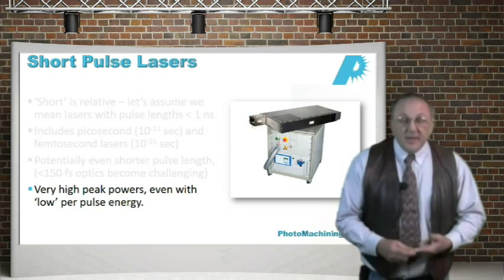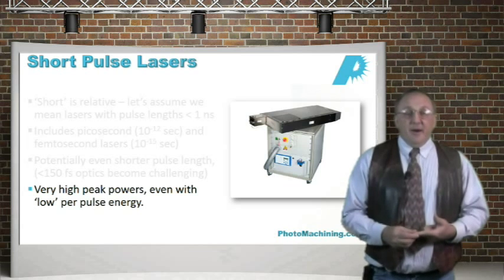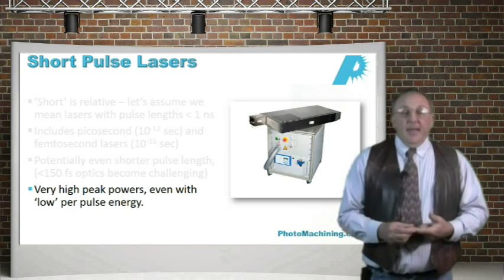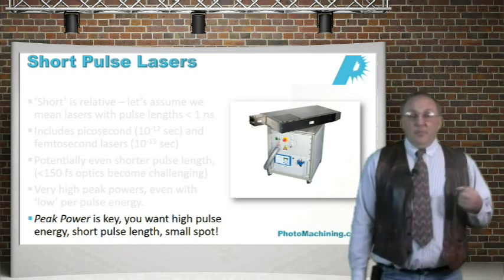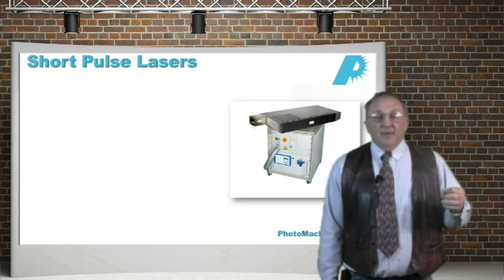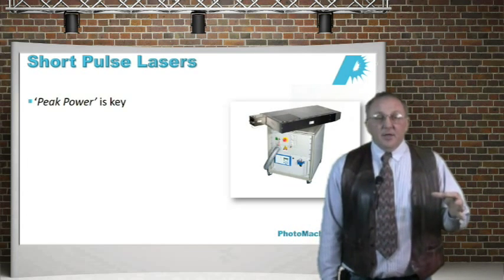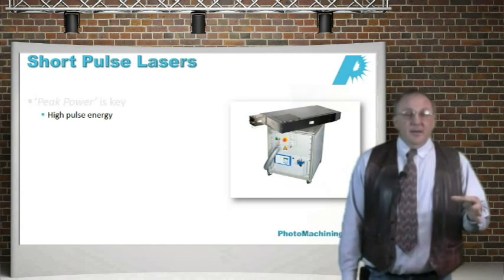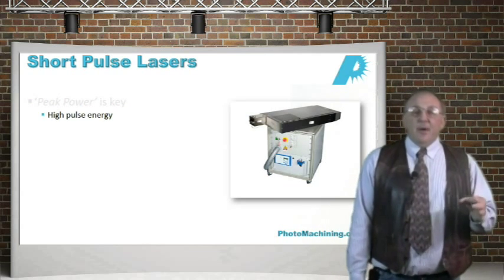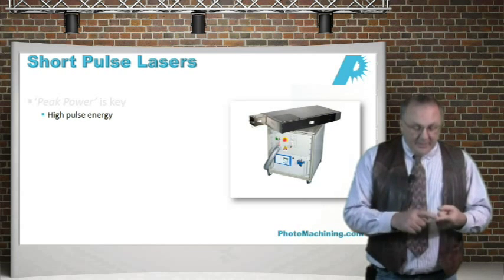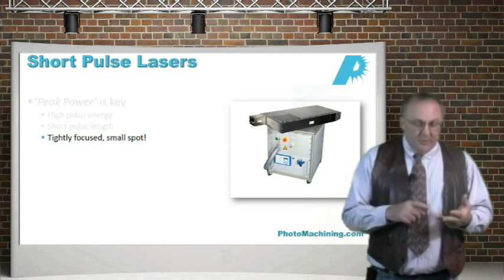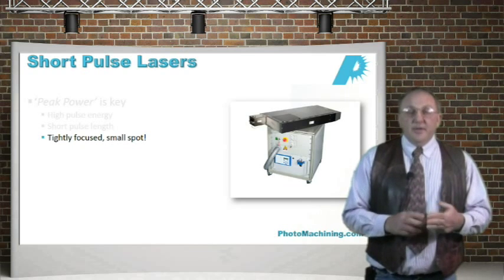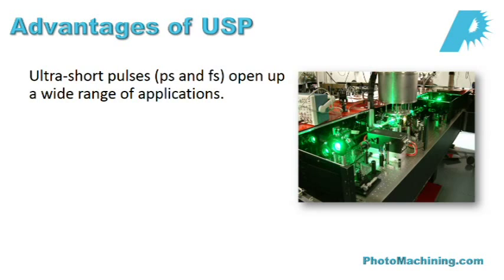Because of the short pulse length, even with low energy per pulse, we get very high peak powers — and peak power intensity is still the key. A high peak power laser is great, but if you have too large a spot size, you won't have sufficient energy density. You want peak power intensity, which means high energy per pulse, short pulse duration, and small spot size. All three of these together give you high peak power intensity.